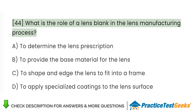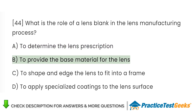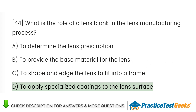What is the role of a lens blank in the lens manufacturing process? A. To determine the lens prescription. B. To provide the base material for the lens. C. To shape and edge the lens to fit into a frame. D. To apply specialized coatings to the lens surface.